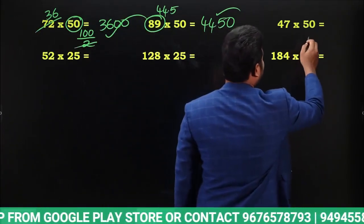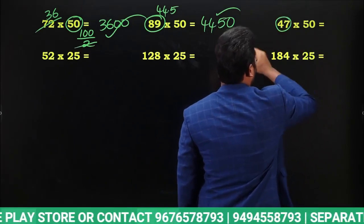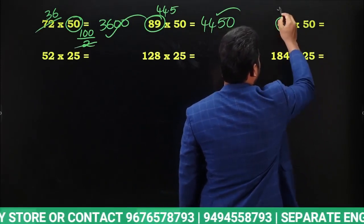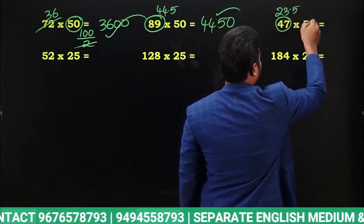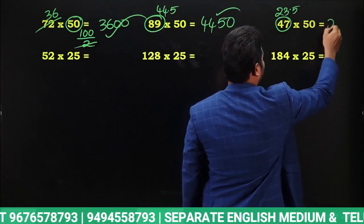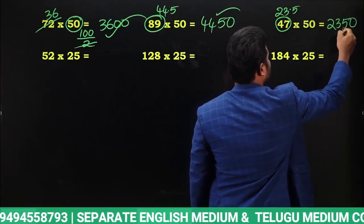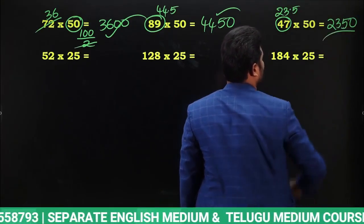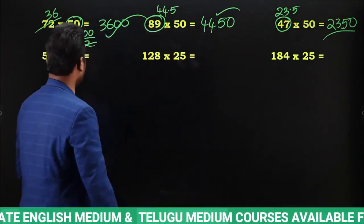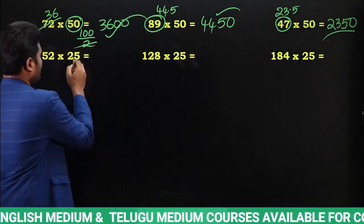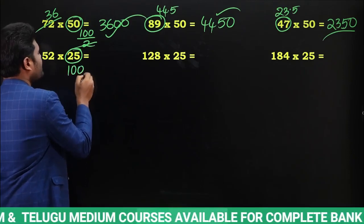Look at this one: 50 can be written as 100 by 2. Half of 47 is 23.5, multiplied by 100 it is going to be 2350. So the answer is 2350 — very simple. Next, look here: 25 we can write as 100 by 4.